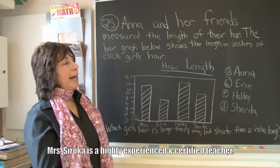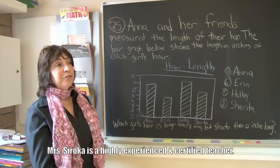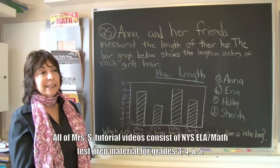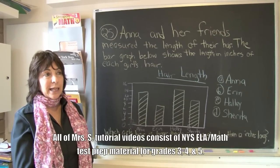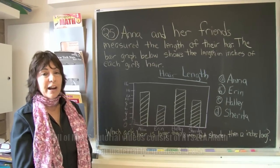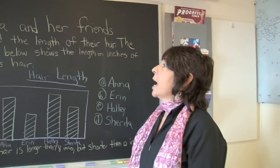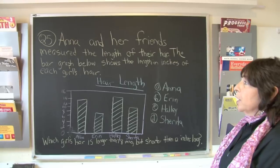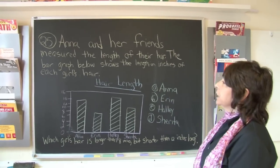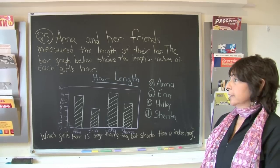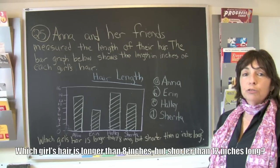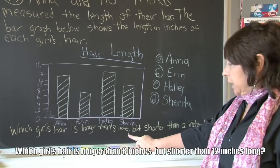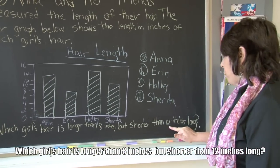Boys and girls, today we're going to look at a question that involves a bar graph. If you read it carefully, it is really quite simple — you must do it in steps. Our first step is to read it very carefully. Let's read it together: Anna and her friends measured the length of their hair. The bar graph below shows the length in inches of each girl's hair. The question asks: which girl's hair is longer than eight inches but shorter than twelve inches?